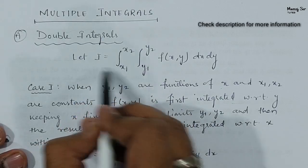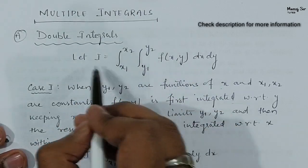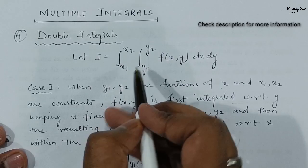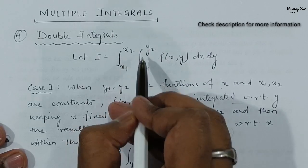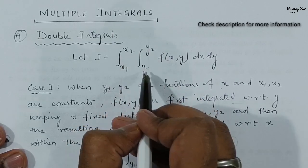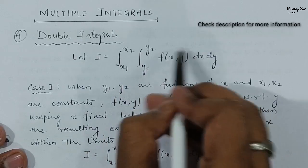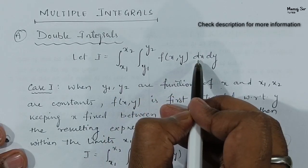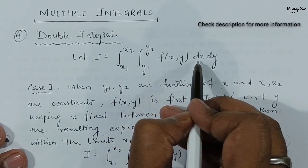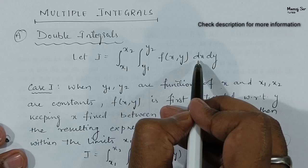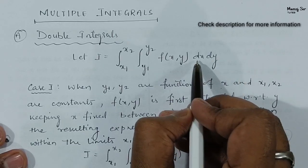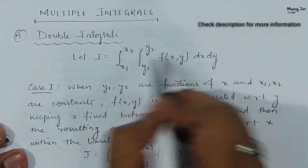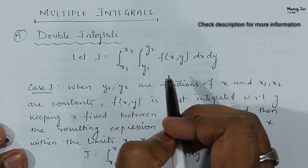Suppose we have the integration i equals to the integral with limits x1 to x2, inner integral with limits y1 to y2, of the function f(x, y), integrating with respect to x and y — that is, dx dy.